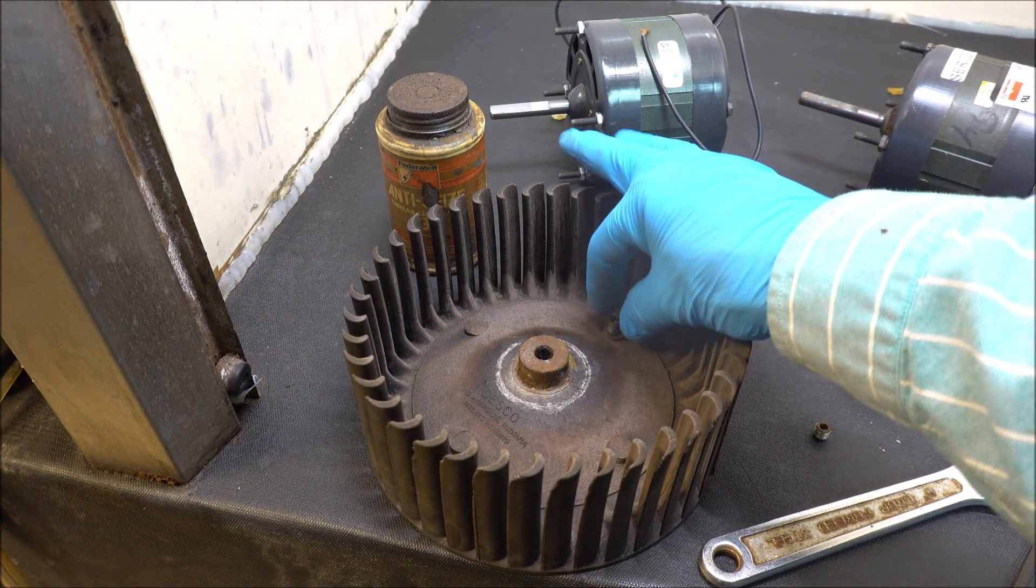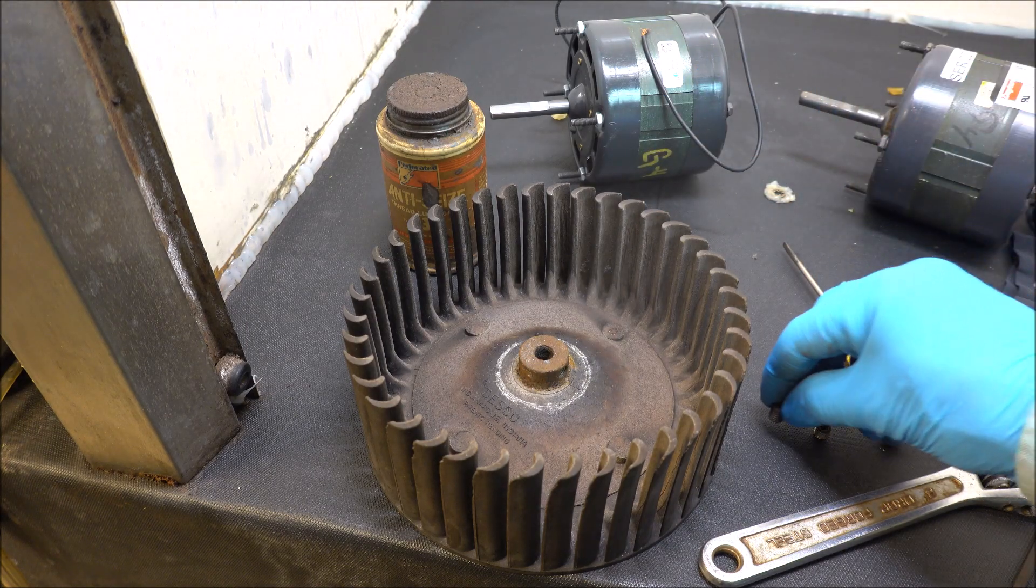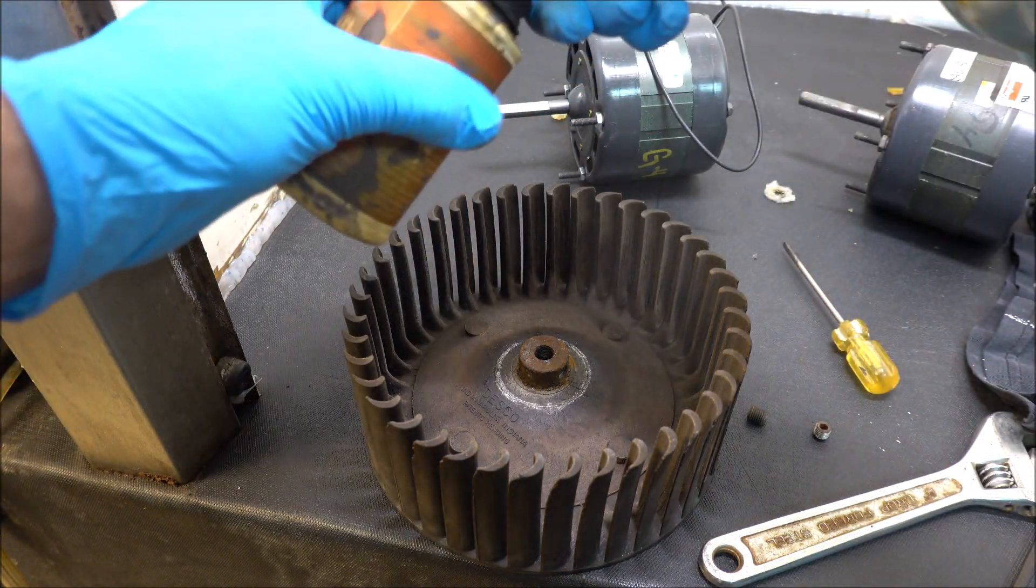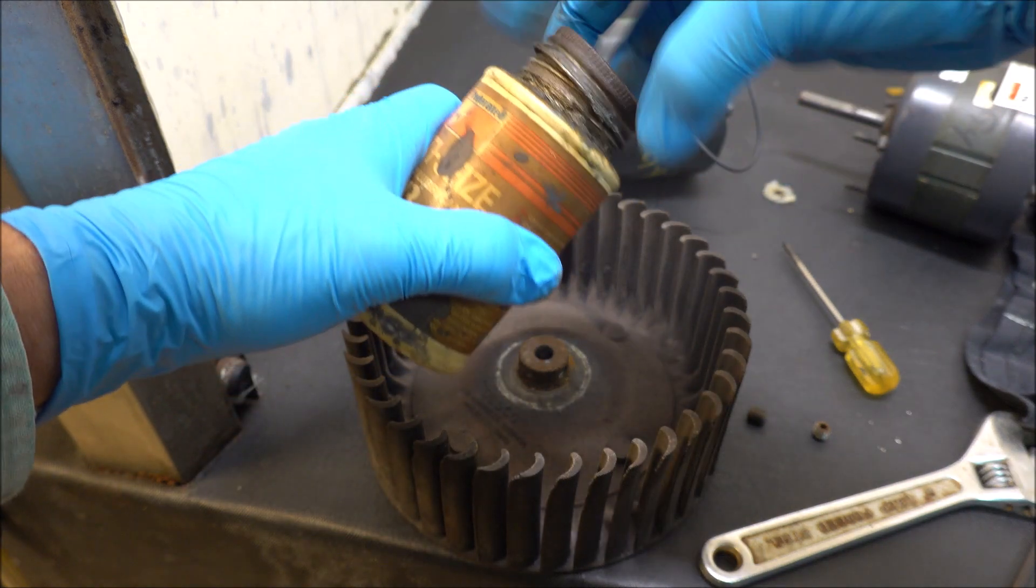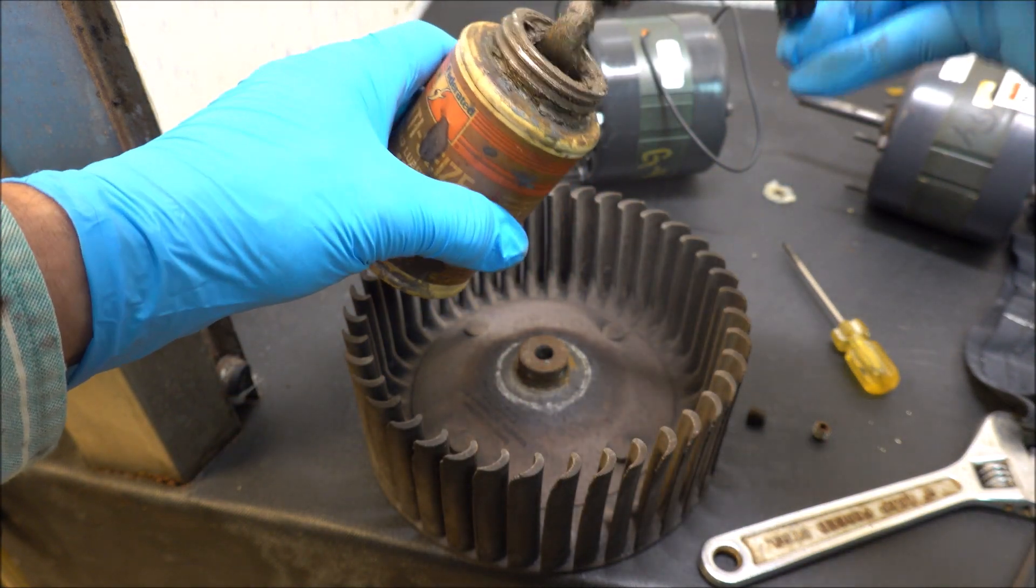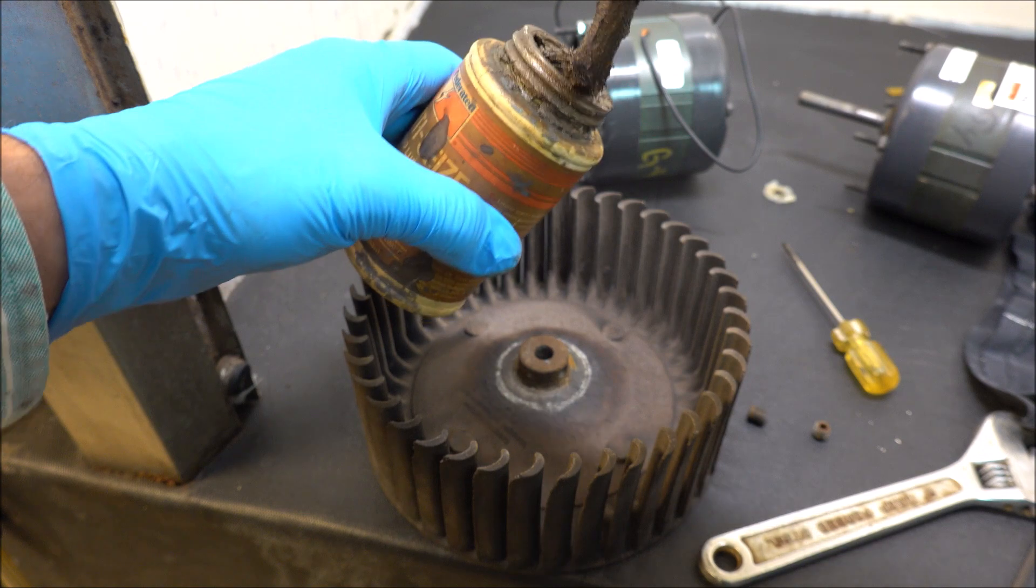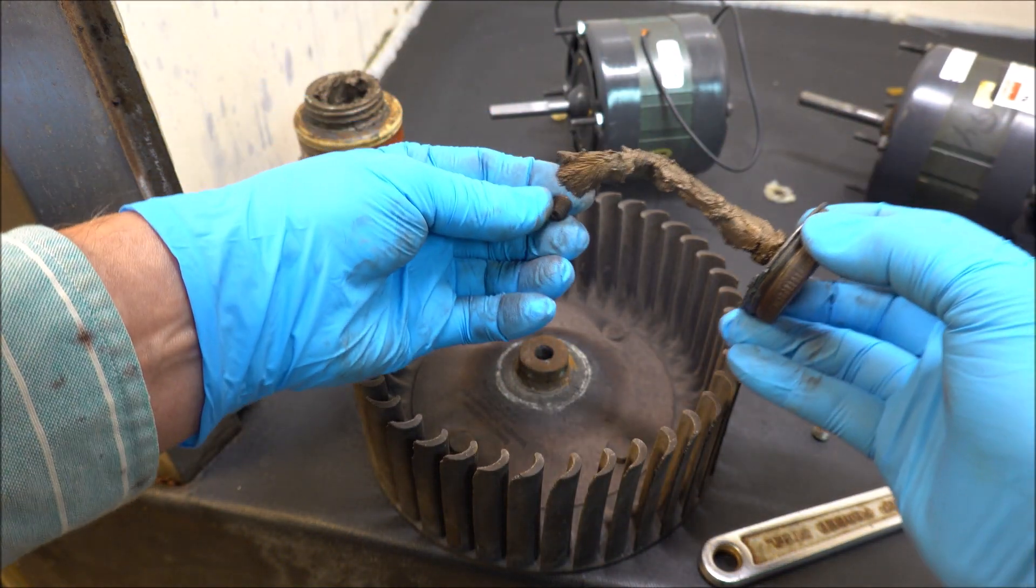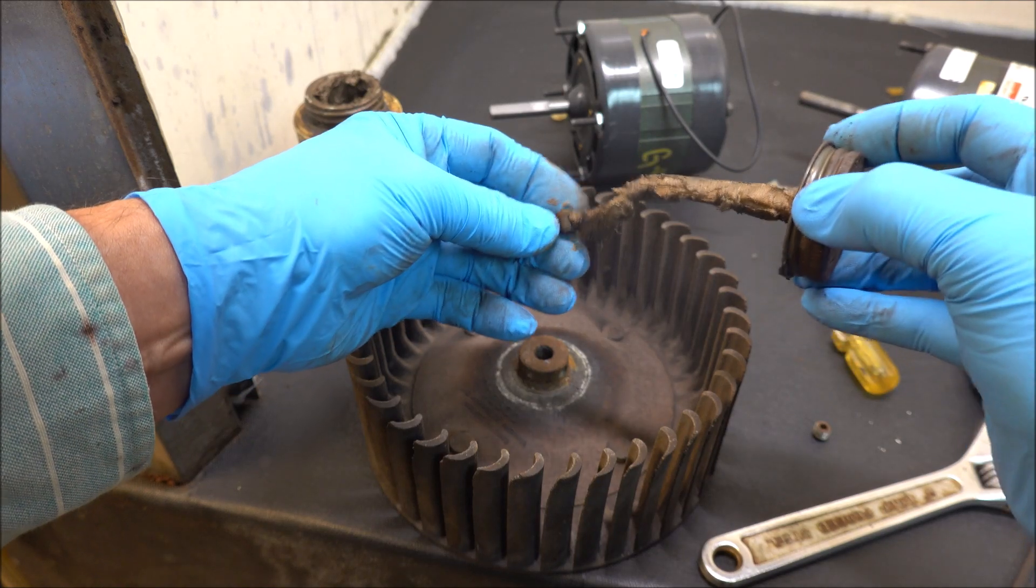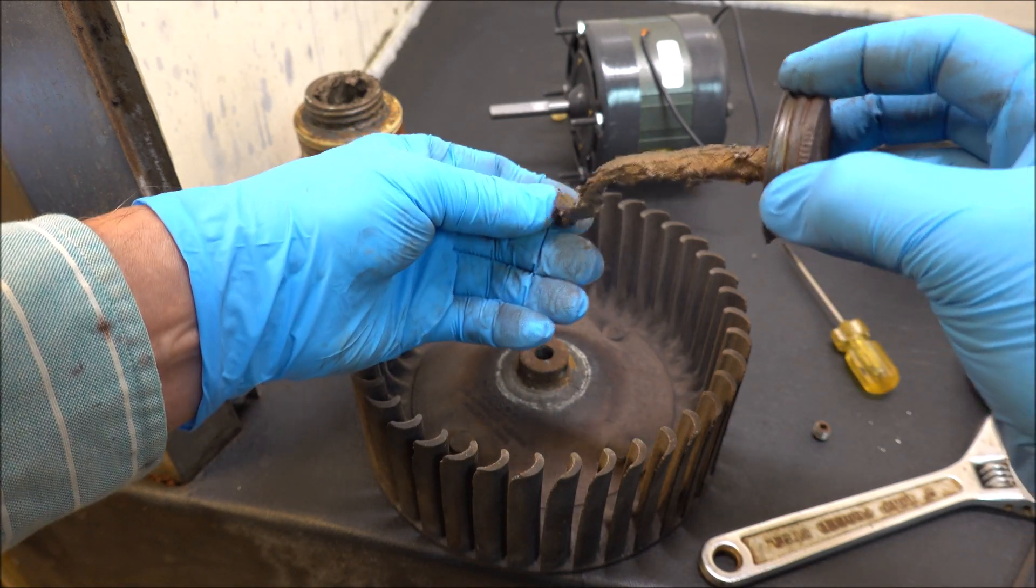I've taken out both of the set screws. There's two in here. What I'm going to do now is apply a little bit of anti-seize. What this does is it will prevent the threads on these set screws from becoming rusted in place.